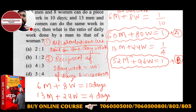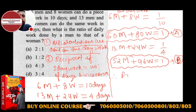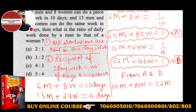In the same way, since 60M + 80W = 1 and 52M + 96W = 1, we can equate both left-hand sides. Therefore, from A and B: 60 men + 80 women = 52 men + 96 women.